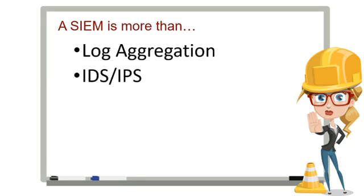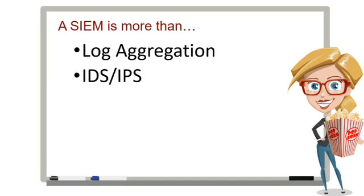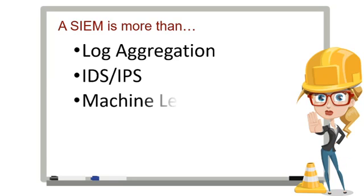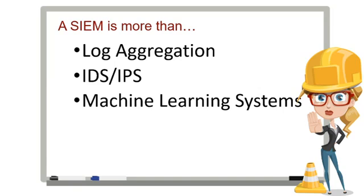Second, some people think that their IDS/IPS system does the same thing as a SIEM — nope. An IDS is a single data feed that by itself is littered with false positives and erroneous information. A SIEM takes that information, cross-correlates it with other systems' data, other threat feeds, and configuration information to determine if it really is a threat. Relying solely on an IDS system is like seeing one frame of a movie and thinking you've watched the entire thing. Machine learning systems can be valuable, but they do not replace the need for a SIEM. They are still a single device with a single view of the system and network. The value of a SIEM is in the cross-correlation of data from all devices, including machine learning devices.